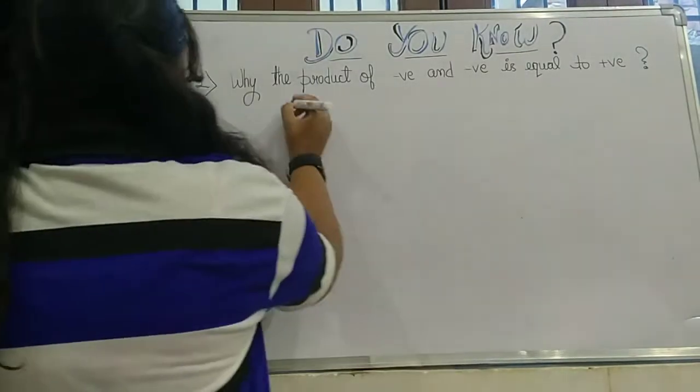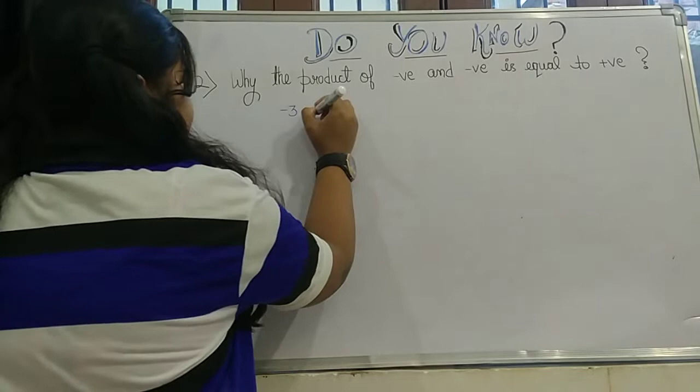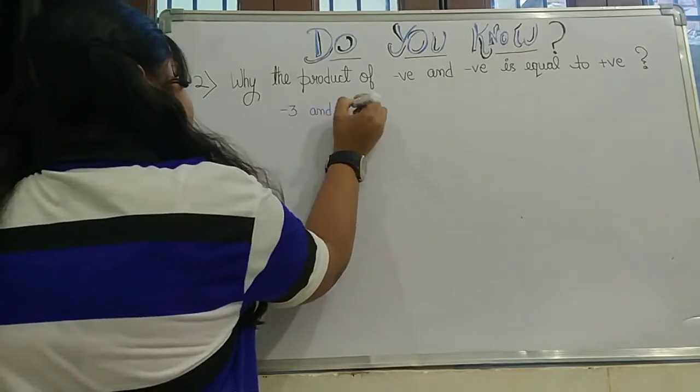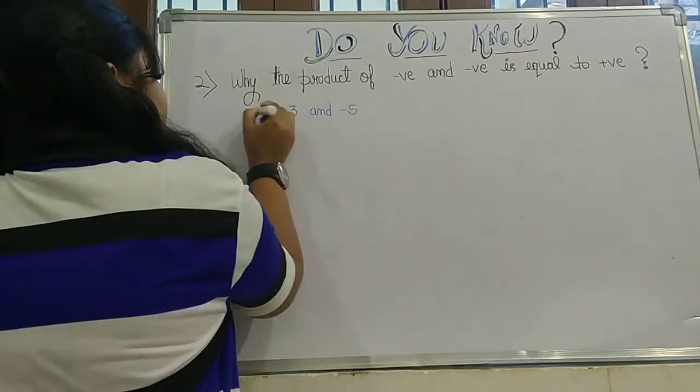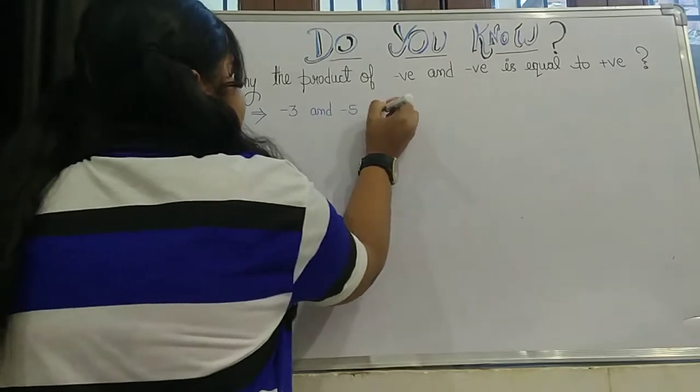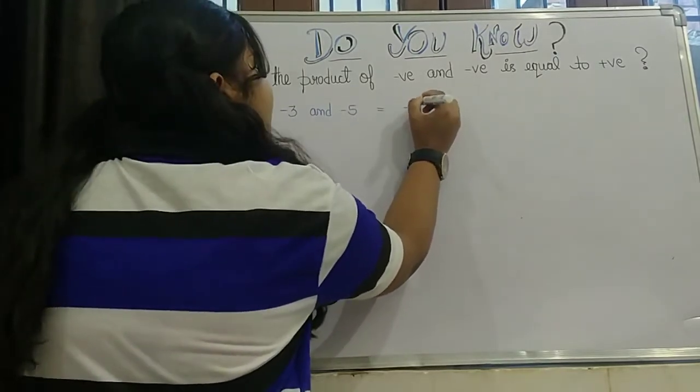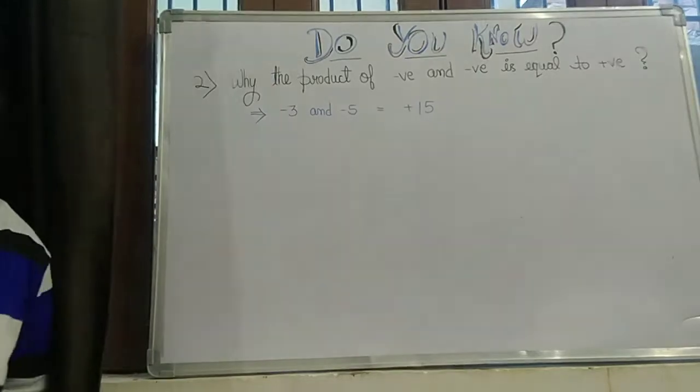So let's take two numbers: let's say minus 3 and minus 5. So we will prove for this why the answer will be equal to positive 15. So let's begin.